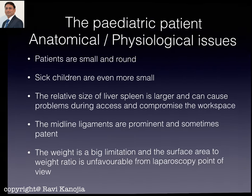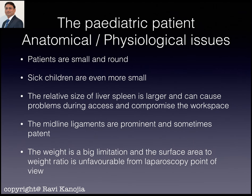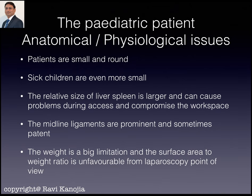Coming to the anatomical and physiological issues, the practising surgeon should be fully aware of aspects different from adult patients. These patients are very small with weight issues. The abdominal surface area available is very small while the relative size of organs inside — particularly the liver and spleen — is very large in proportion to total abdominal volume. The midline, oblical ligament, falciform, and urachal ligaments are very prominent and often patent, causing difficulty when placing a port in that area. The surface area to weight ratio is unfavorable from a laparoscopy standpoint because these patients are quite small.